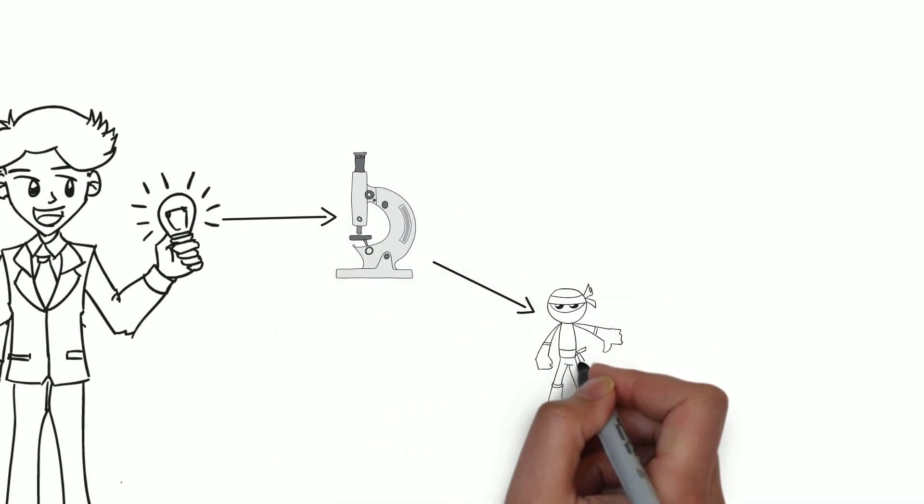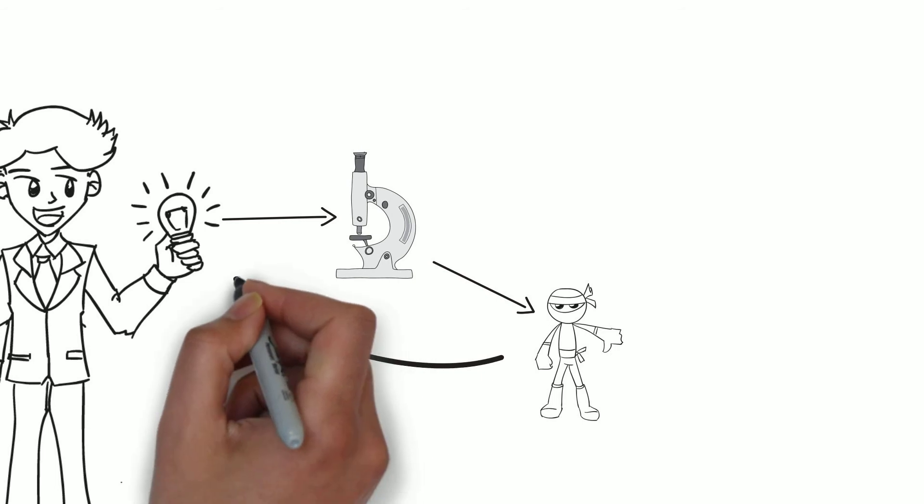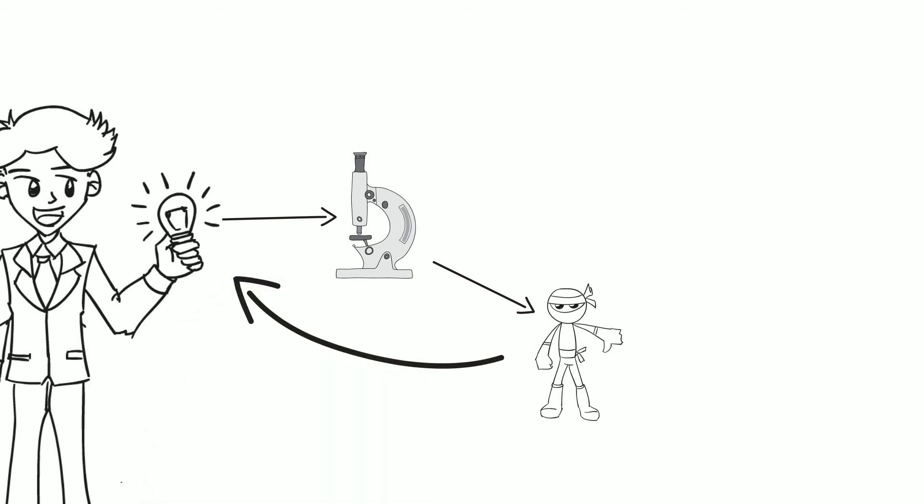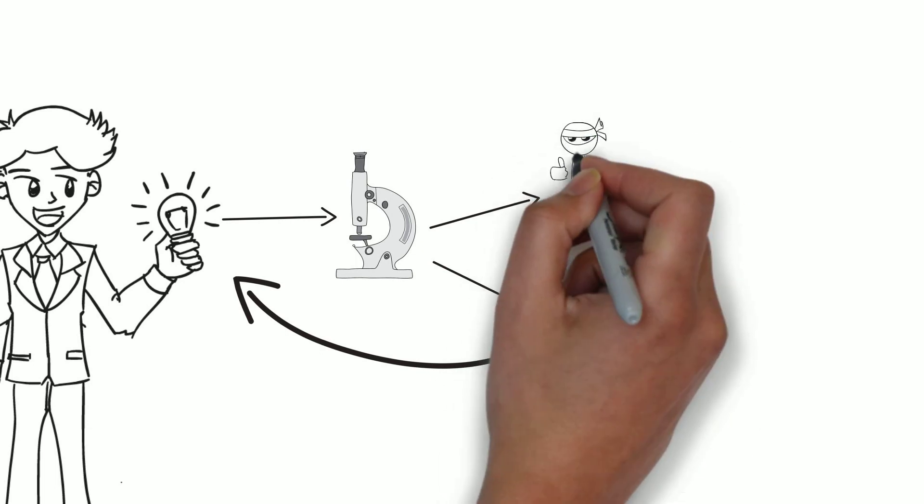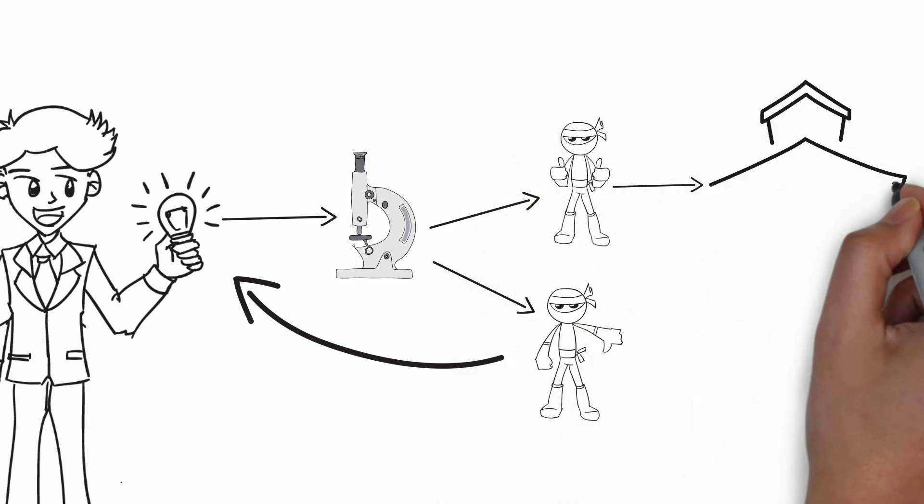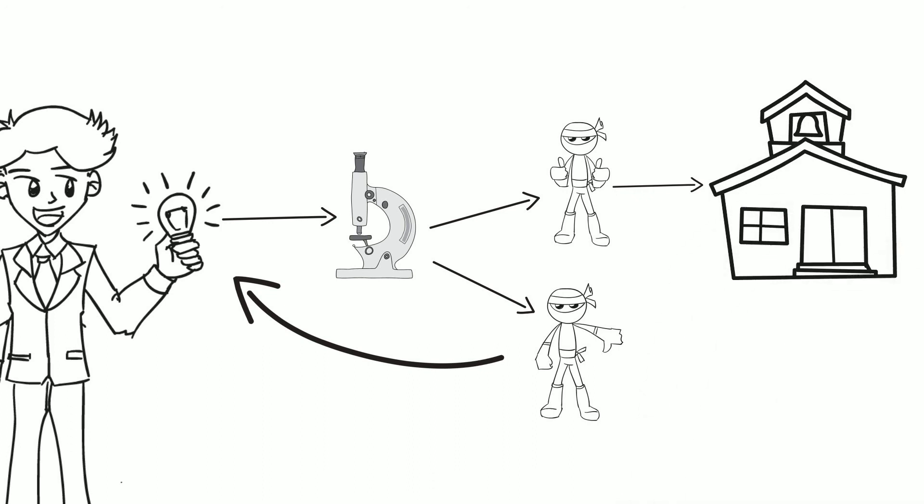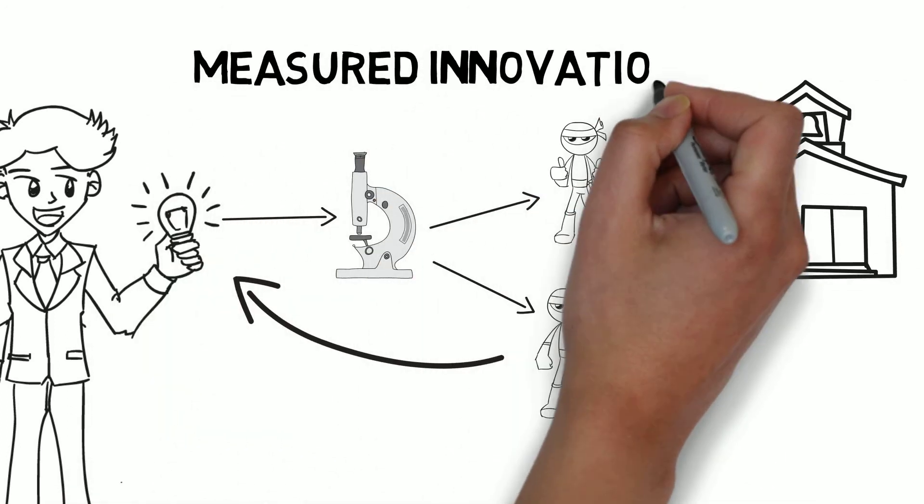For example, a school could build residential and public-style restrooms so students could go back and forth between the two different environments. The effectiveness of this limited intervention could be measured to determine whether more simulated environments could be implemented.